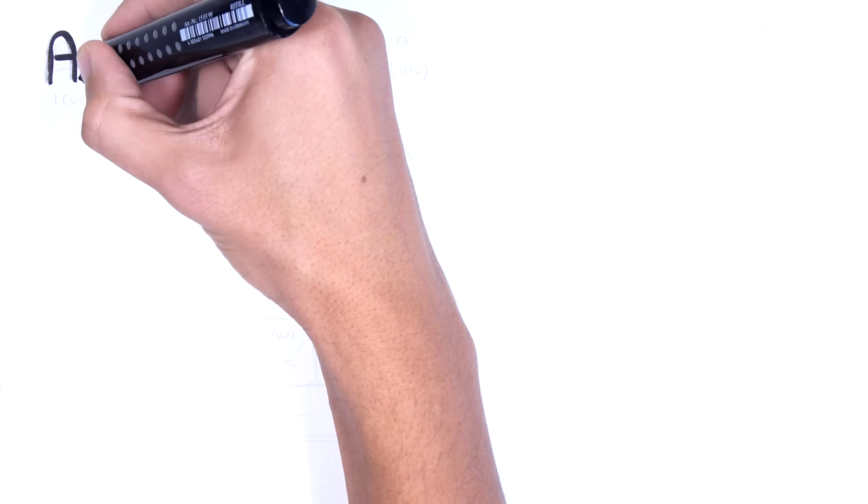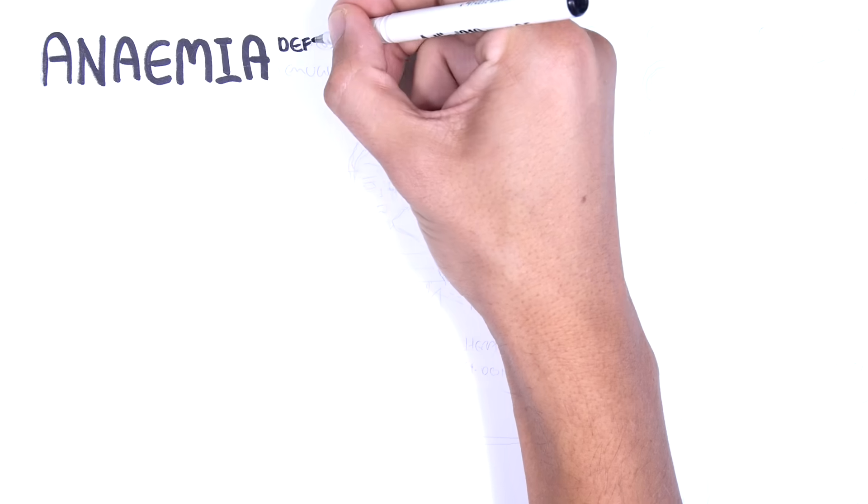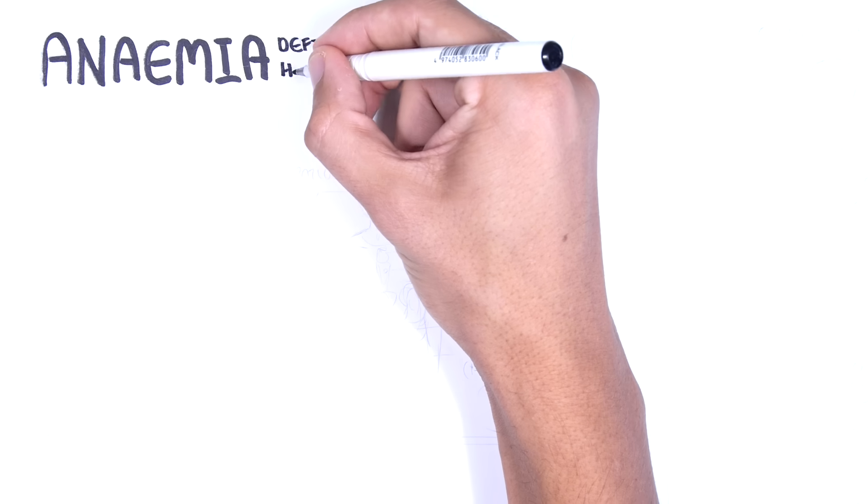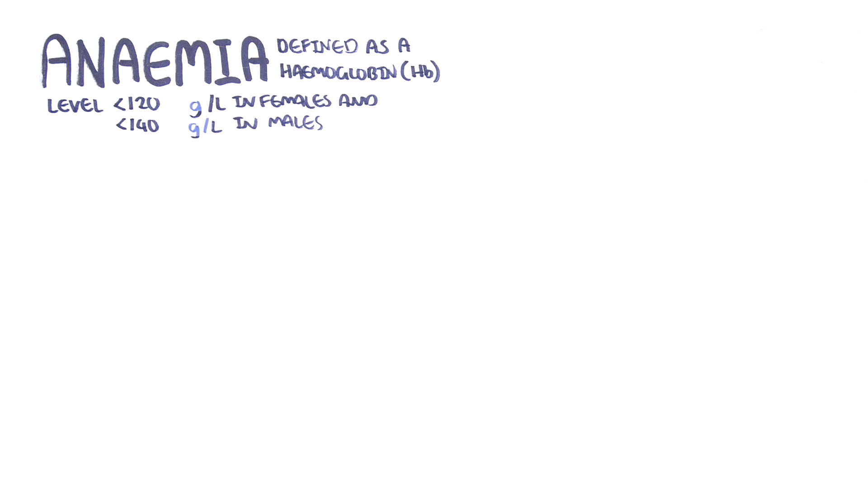Hello, in this video we're going to talk about anemia. Anemia can be rigorously defined as a reduced absolute number of circulating red blood cells. In practice, a low hemoglobin concentration or low hematocrit is the most widely accepted definition for anemia. Anemia can be defined as a hemoglobin level of less than 120 grams per liter in females and less than 140 grams per liter in males.